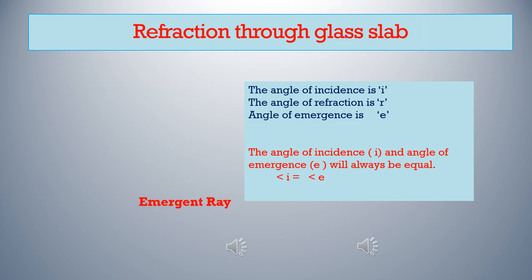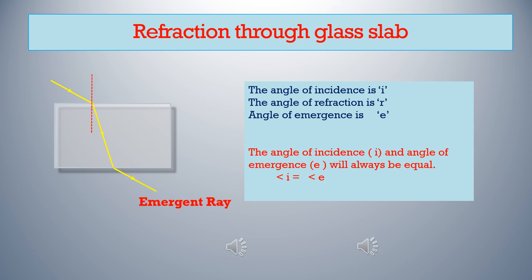The change in the path of light when a ray of light enters from one medium to another medium is known as refraction. In the case of glass slab, the light ray enters from air to glass in the first phase — that means from rarer to denser medium — and the ray of light bends towards the normal. Then in the second phase, when it is coming out of glass, it enters from denser medium to rarer medium, from glass to air, and the ray of light bends away from the normal.